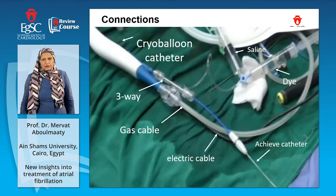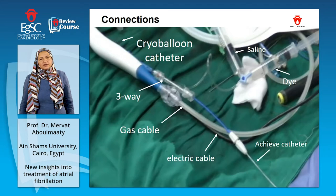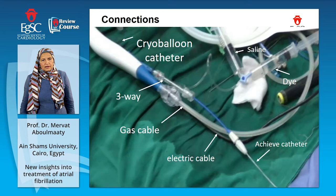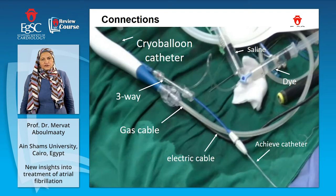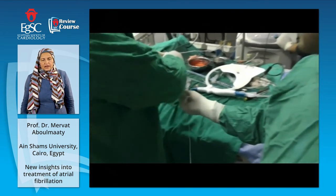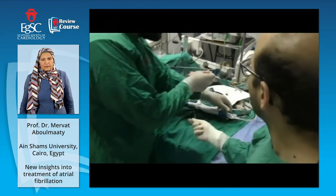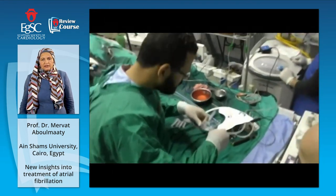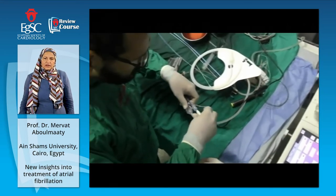We started to prepare the machine and equipment for the cryoballoon ablation. This is the cryocatheter with a sideway to inject saline and contrast. Here is the Achieve catheter, which records the pulmonary vein potentials. The gas cable is connected to the machine, which delivers the gas that makes the cooling, and the electrical cable connects to the machine. Everything should be flushed with heparin, everything should be checked. Here is our team: Dr. Omar Hatem, Dr. Musa, and Dr. Mazen.